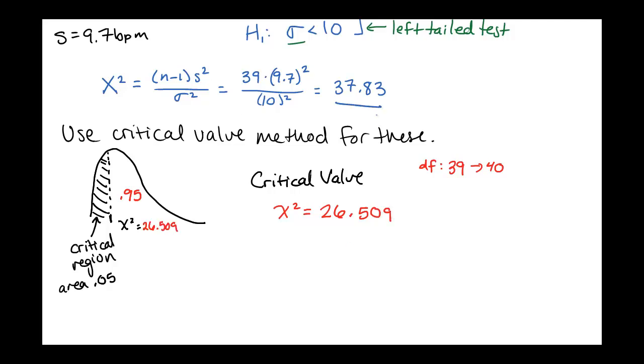So we look at our test statistic, which was about 38, and say, is this in the critical region? Now 38 would be somewhere to the right of 26. It's a little bit bigger, which means that this is not in the critical region. And since it's not in the critical region, we will not reject H0.